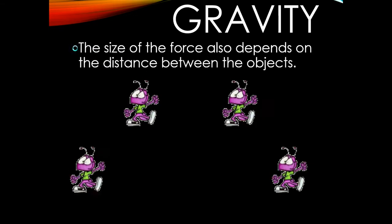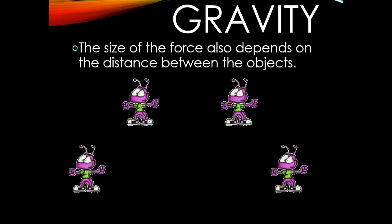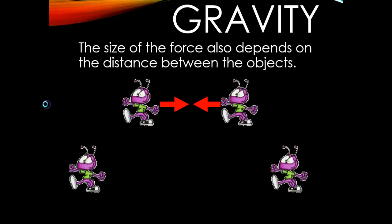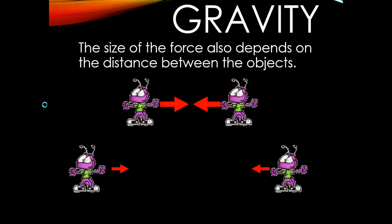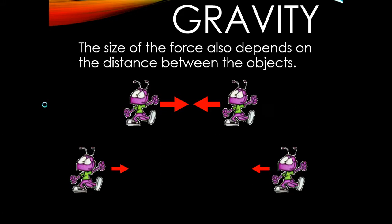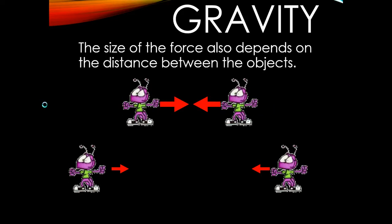Gravity also depends on the distance between the objects. Here we have four objects all the same size, but the two ants on the top are closer together than the two ants on the bottom. So the force between the two ants that are closer together is going to be stronger than the force on the bottom, where they're farther apart.